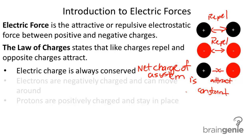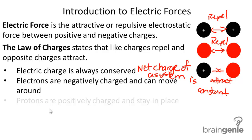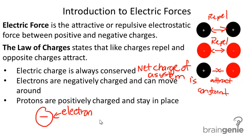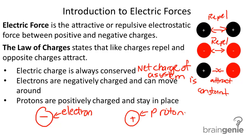It does not change. The next key point: electrons are negatively charged and can move around. Protons are positively charged and they don't move — they stay in place. This is very key to remember.